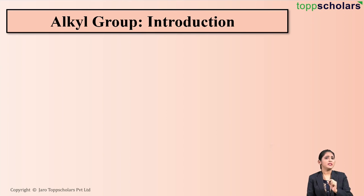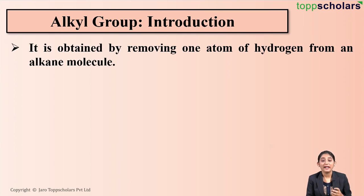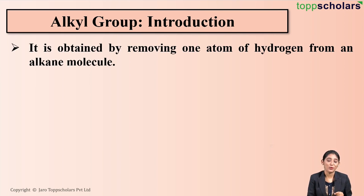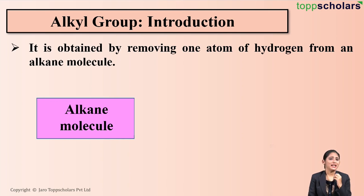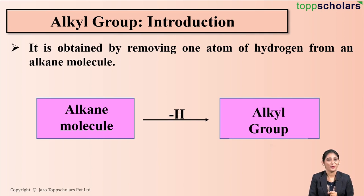How is an alkyl group actually obtained? An alkyl group is obtained by simply removing one atom of hydrogen from an alkane molecule, which simply means that if you take an alkane molecule and remove one hydrogen atom from it, what you get is an alkyl group.